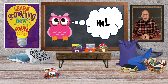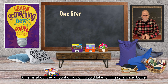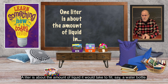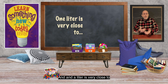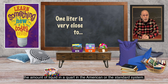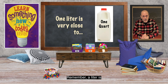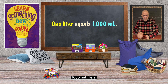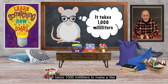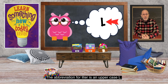The next unit of measure for liquid volume in the metric system is the liter. A liter is about the amount of liquid it would take to fill a water bottle, and a liter is very close to the amount of liquid in a quart in the American or standard system. Remember, a liter is one thousand milliliters — it takes one thousand milliliters to make a liter. The abbreviation for liter is an uppercase L.